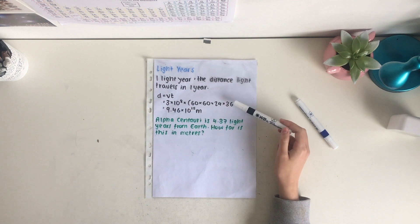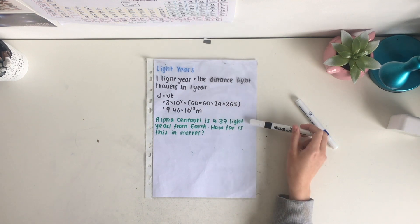You always need to do this calculation when you're working out, not just memorize this value. Alpha Centauri, the closest star to our star, is 4.37 light years from the earth. How far is this in meters?